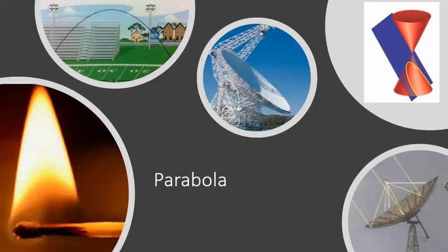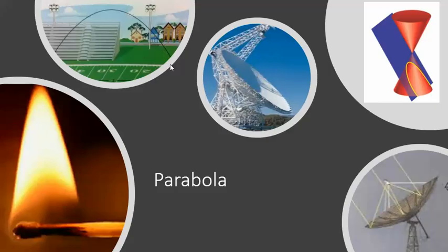The last conic section is a parabola, which you probably have some familiarity with. To get a parabola, the cutting plane must be parallel to the slant line of the cone, intersecting only one cone. A parabola also has a focus — if you reflect something off a three-dimensional parabola, everything reflects to that focus point. This is why satellite dishes are parabolic, with a receiver arm placed at the focus. The flight path of a projectile is also parabolic.